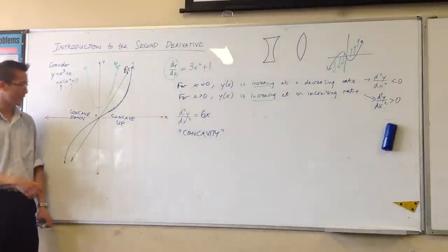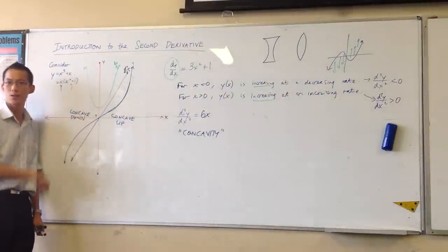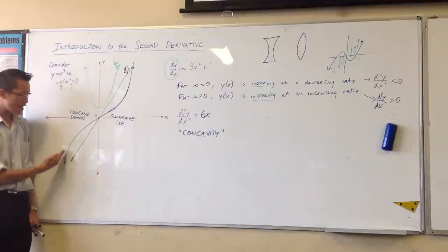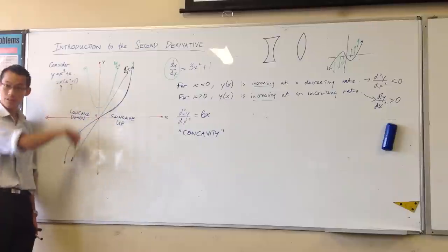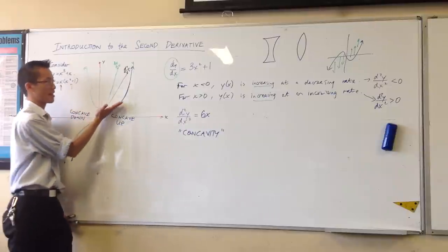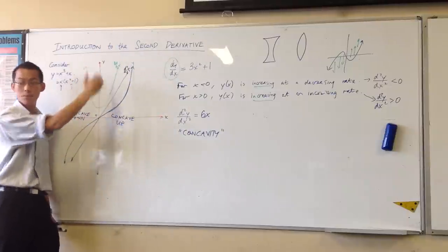So, concavity. Concavity comes from this second derivative. It's another way of saying, I'm increasing but I'm at a decreasing rate. That's concave down. Or I'm increasing but I'm at an increasing rate. That's concave up.